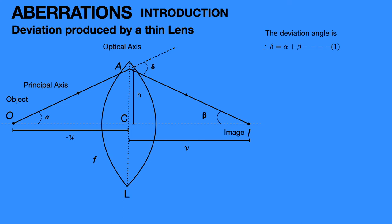Here α and β are very small angles. We can write α ≈ tan α and β ≈ tan β. Hence, from the animation, for triangle AOC and triangle AIC, we can write α ≈ H/(-U) and β ≈ H/V. This is equation 2.